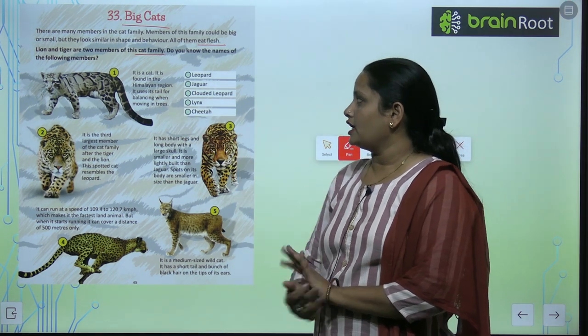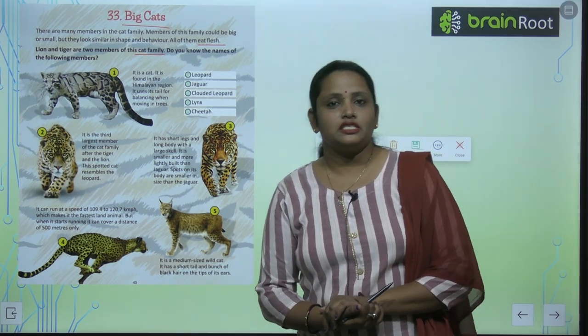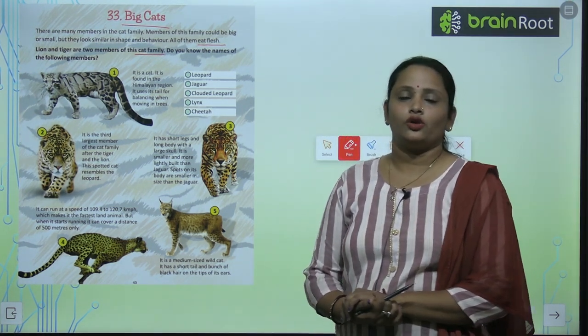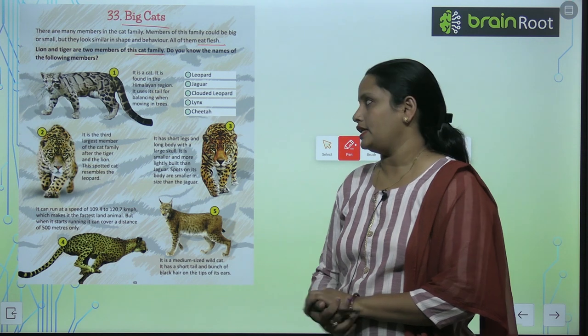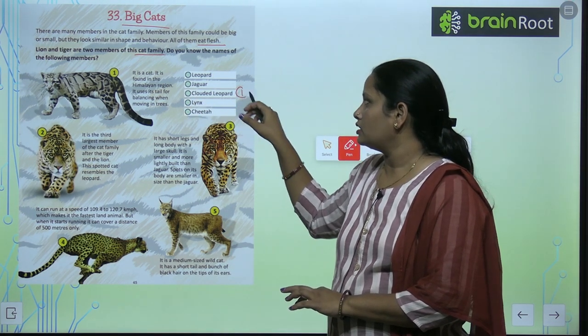It uses its tail for balancing when it moves on trees. So this is clouded leopard, number one.